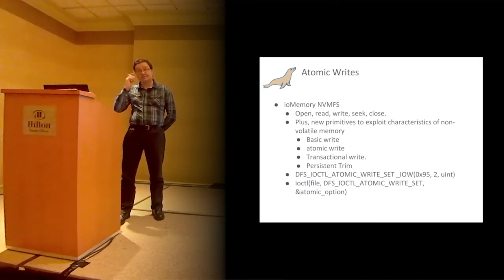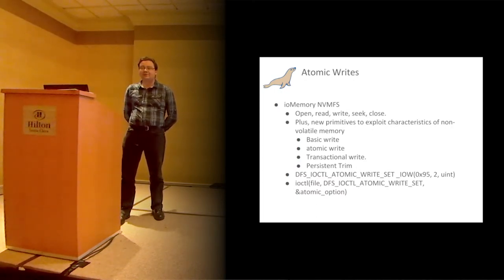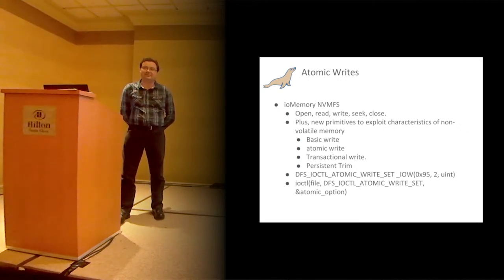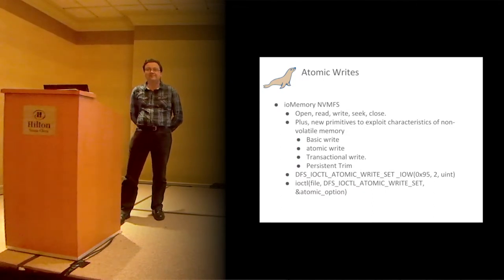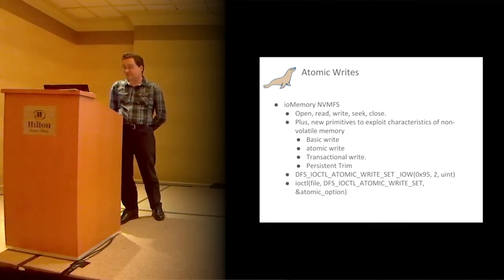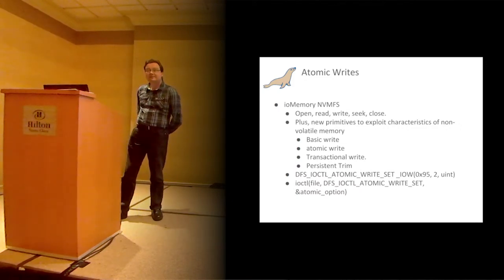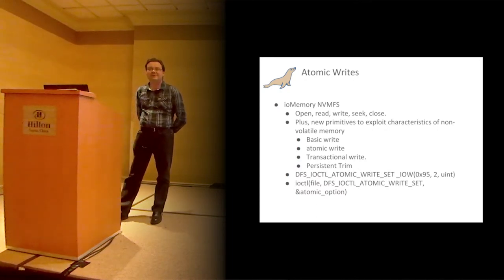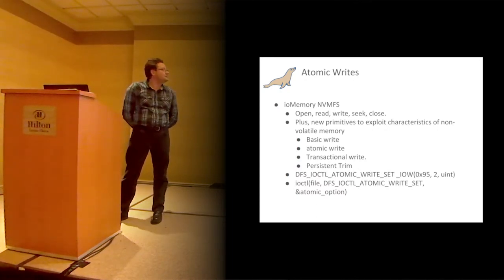Basically, this means there is a normal POSIX call which you can call and set atomic writes via an ioctl option. If the storage layer supports that, it will return okay and you are now using atomic writes. If it doesn't support it, some kind of error code comes back. I have tried this on my laptop and it does give me an error code — you can't use it there.